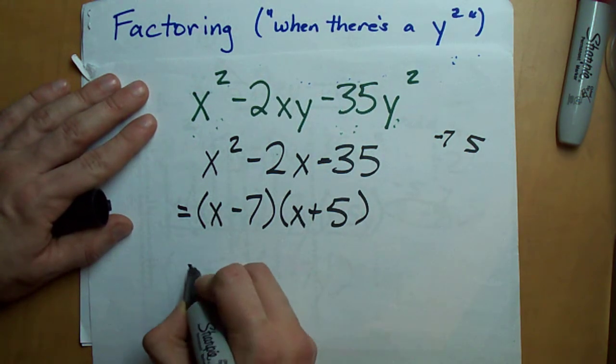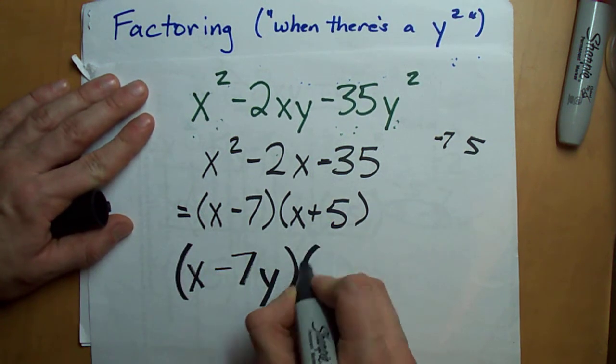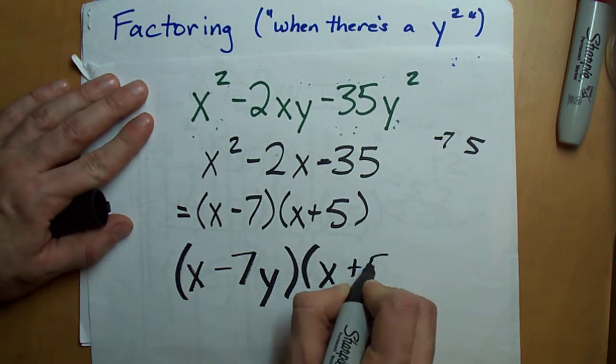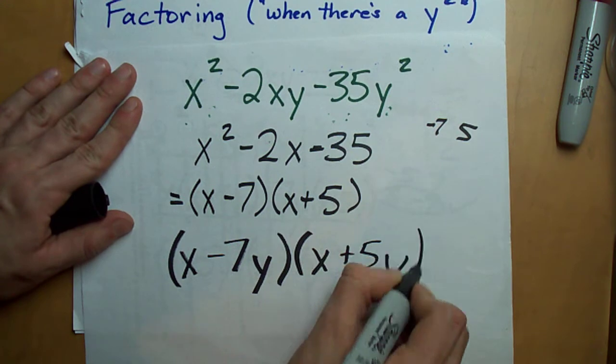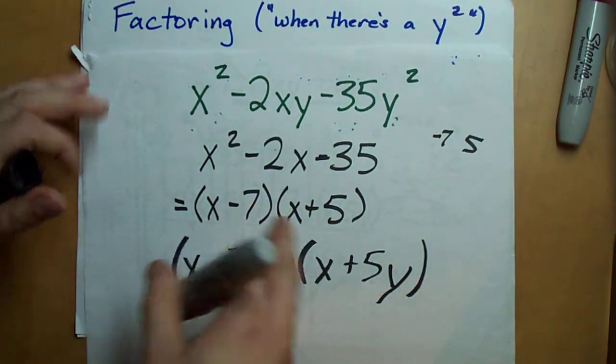The answer is x minus 7y times x plus 5y. It's the same thing but I put y at the end of each of those.